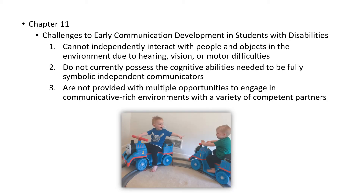In Chapter 11, we talk about challenges of early communication development in students with disabilities — really young children, infants. Number one: they cannot independently interact with people and objects in the environment due to hearing, vision, or motor difficulties. Two: they do not currently possess the cognitive abilities needed to be fully symbolic independent communicators. Three: they are not provided with multiple opportunities to engage in communicatively rich environments with competent partners. That's why early interventions are so important — so they do not fall behind, since we know they may need additional supports to catch up.